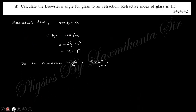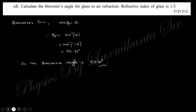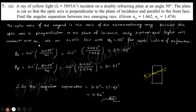The next question: calculate the Brewster angle for glass with refractive index 1.5. The Brewster angle theta_p equals tan⁻¹(mu). Substituting mu = 1.5, we obtain the Brewster angle.